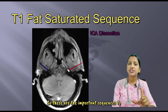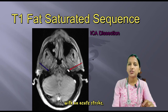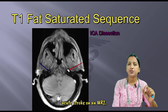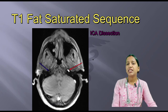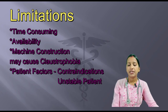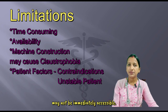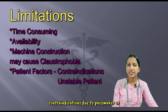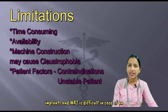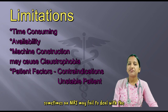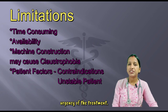These are the important sequences to keep in mind while evaluating a patient with an acute stroke. While working in the emergency department, one must be able to identify an acute stroke on MRI. The main limitations of MRI are that it may not always be available, it is time-consuming, and may not be immediately accessible. There may also be patient eligibility factors or contraindications such as pacemakers or implants, and MRI is difficult in the case of an unstable patient. Despite its potential benefits, MRI may sometimes fail to address the urgency of treatment.